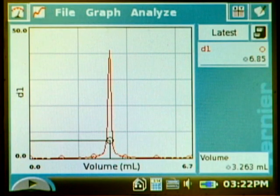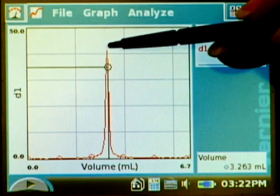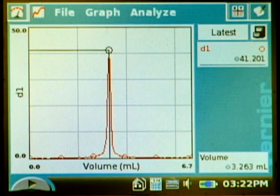And it automatically then plots that for us on the graph. The equivalence point would be at the peak of that right there. Volume of 3.263 milliliters would be our equivalence point using the first derivative as a method to find that.